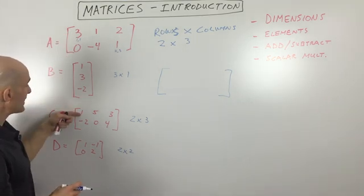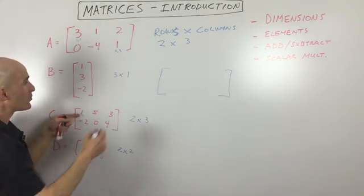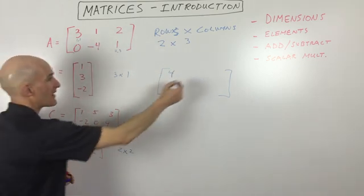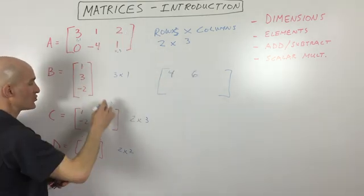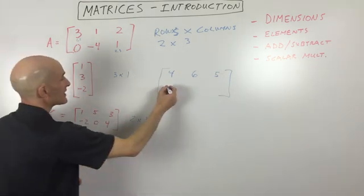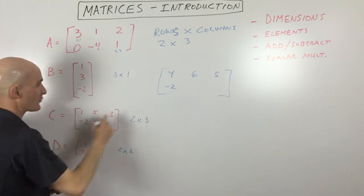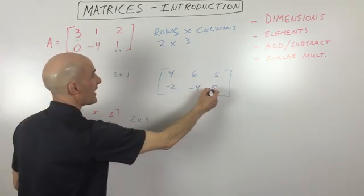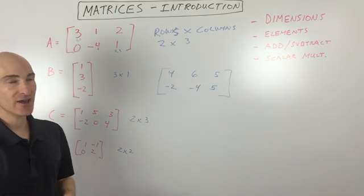You're going to add the corresponding elements. So three plus one gives us four, one plus five gives us six, two plus three is five, zero plus negative two is negative two, negative four plus zero is negative four, and one plus four is five. So we added the two matrices together.